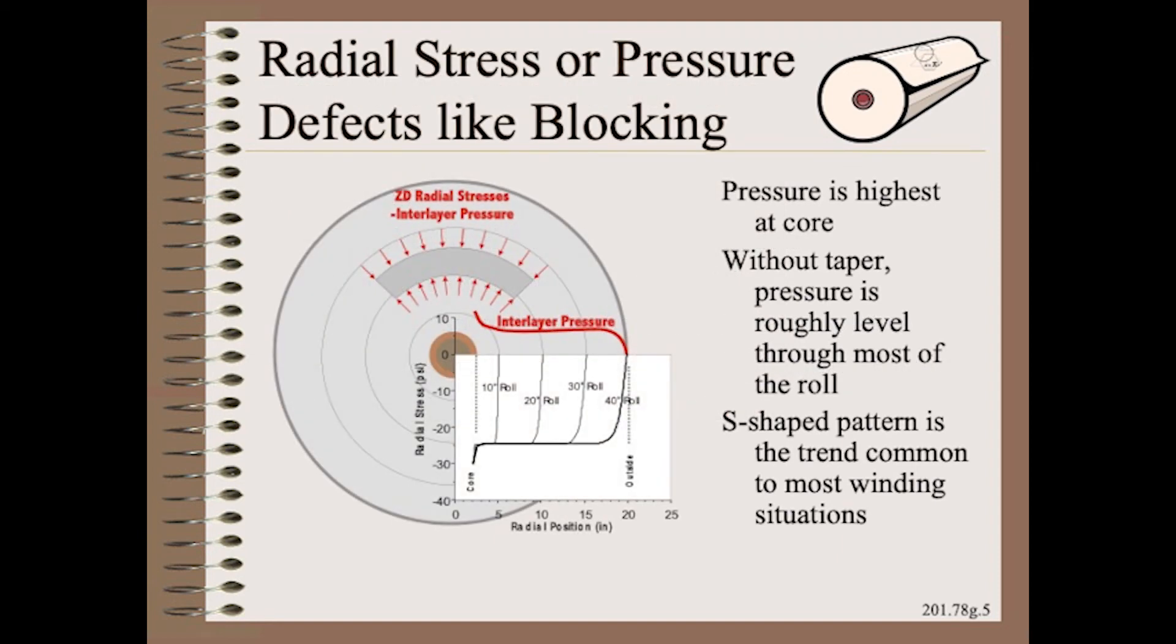For example, the pressure between the layers can predict a wide variety of defects such as blocking, bulk loss, and one of the most common types of telescopes. The pressure between the layers from the core to the outside is always high, medium, low. Highest at the core, medium in the middle, lowest or actually zero at the outside of the roll. High, medium, low, or S-shape for every material, every winder, and every winder setting. That's all you need to know about inner layer pressure.